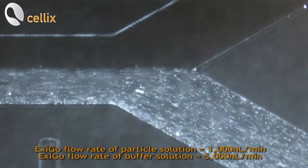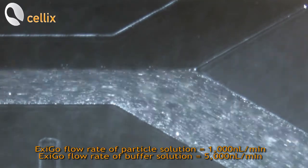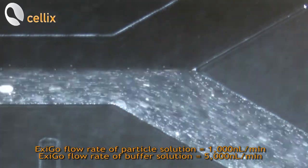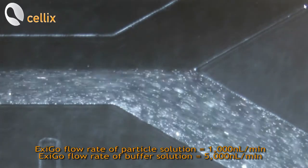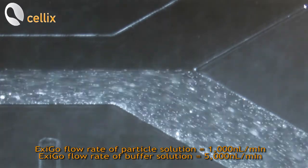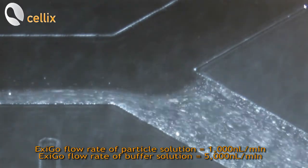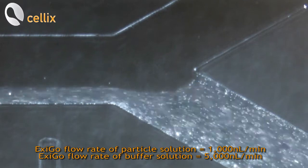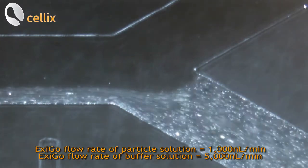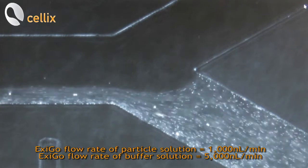We can now change also the flow rate of the buffer solution. So we can enter 5000 nanoliter per minute. As we can see here the interface has been moved on the opposite side.